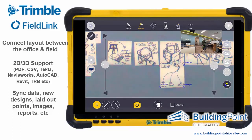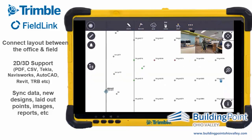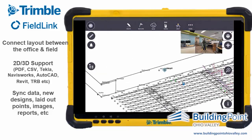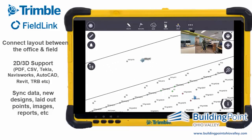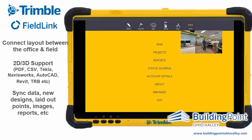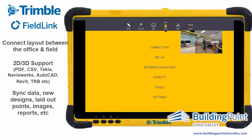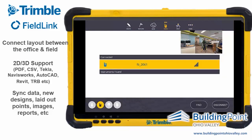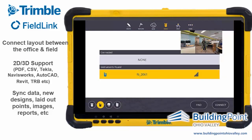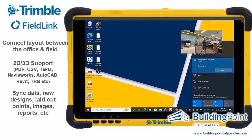Now that I've captured these points, I have three laid-out points within tolerance, two outside of tolerance, and four points captured up on the wall in the square. From here I'm going to go into my projects and first disconnect from the RI in order to connect up to Trimble Connect to sync the data back.